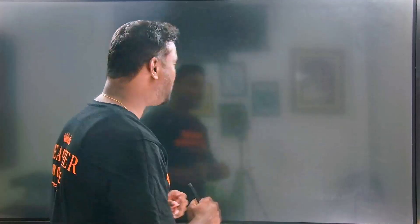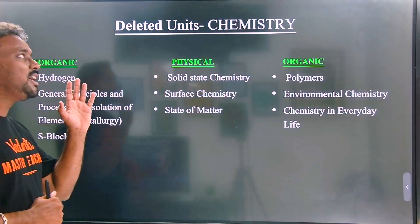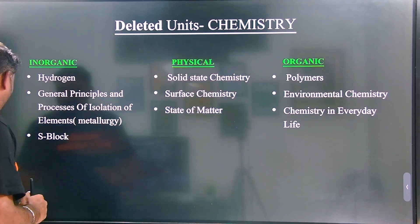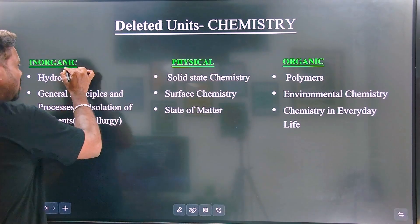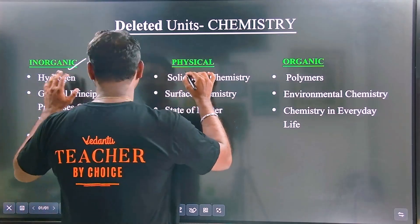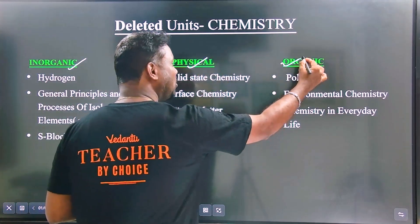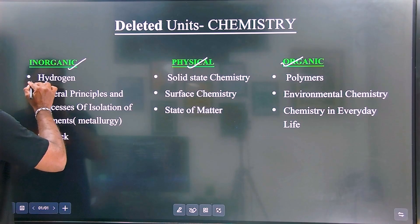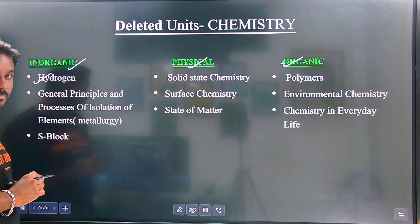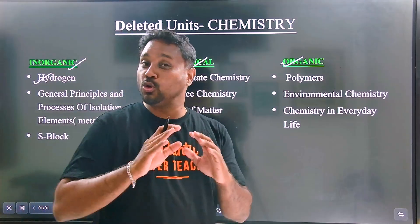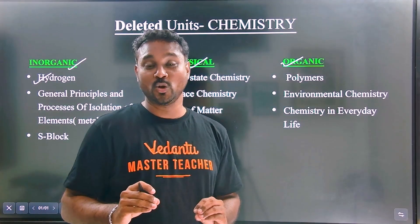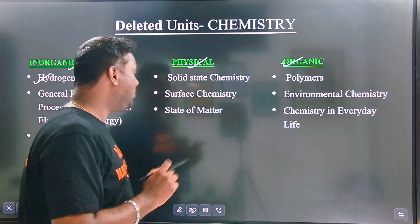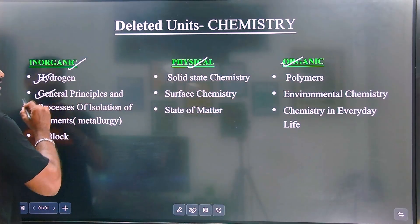We will start with the delicate units in chemistry. We will get into the topic — yes, it is an organic, inorganic, and physical chemistry breakdown. Inorganic topics like hydrogen are delicate topics, but instead we will start here — nothing is skipped.